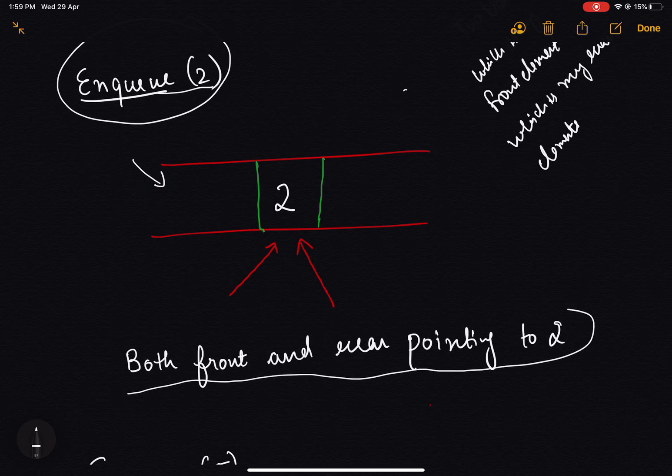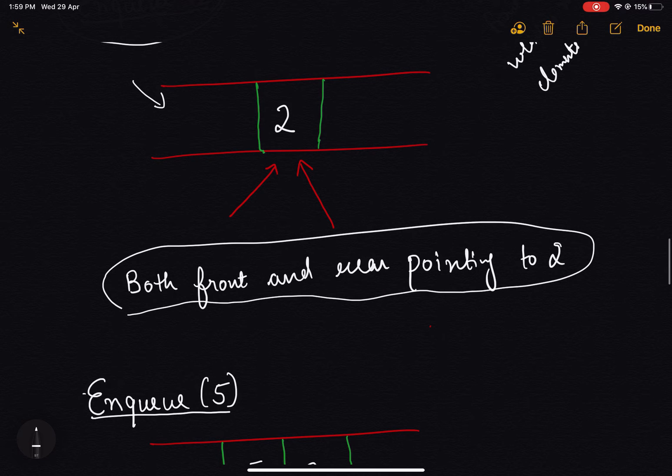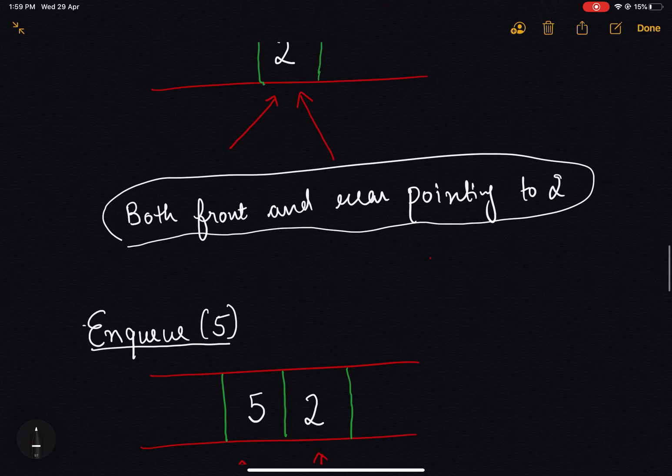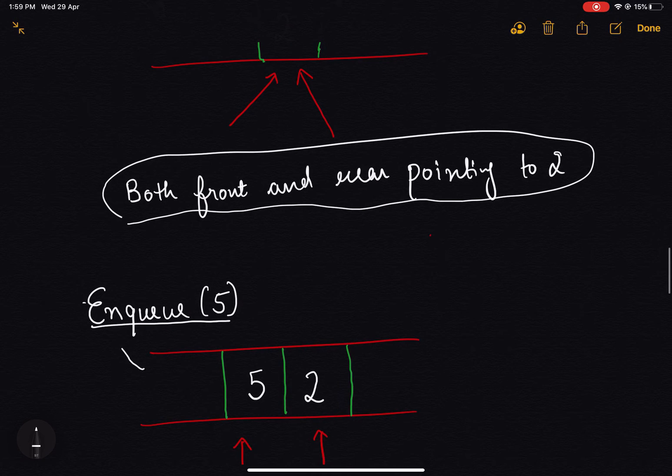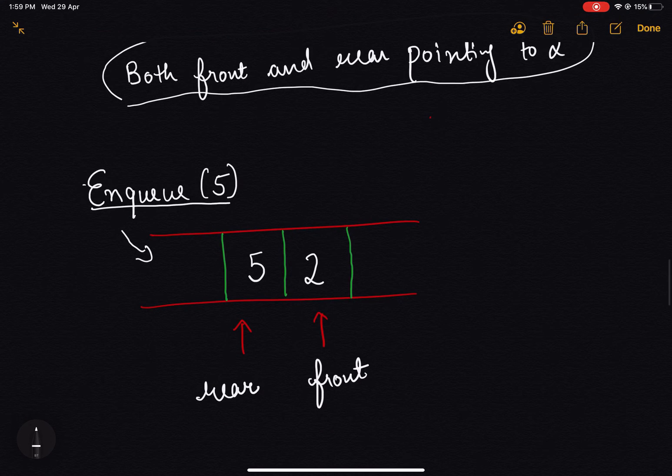If we have only one element in the queue, then both front and rear point to 2. Now let's say we are inserting one more element into the queue, that is 5. It will go from the rear side. Now we need to update our front and rear. Internally the library is handling all those things. Now the rear reaches here and front remains here.